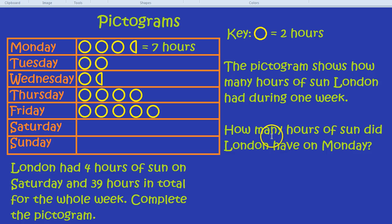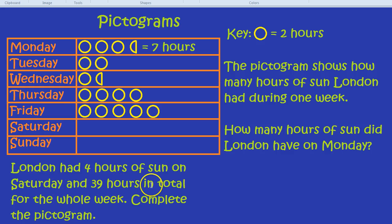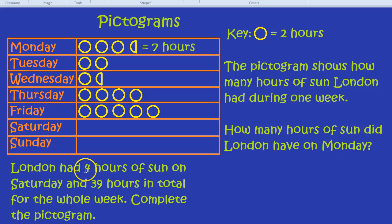What about the second question though? London had four hours of sun on Saturday and 39 hours in total for the whole week. Complete the pictogram. Right, now it's our turn to start drawing. We need to draw for Saturday four hours of sun. How would we do that?